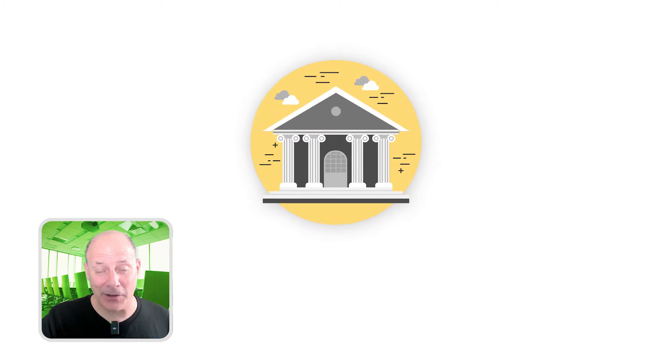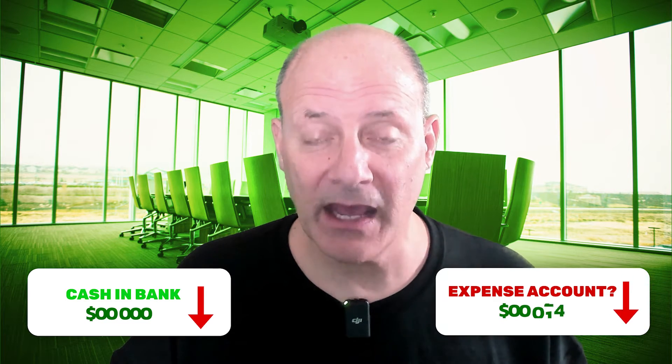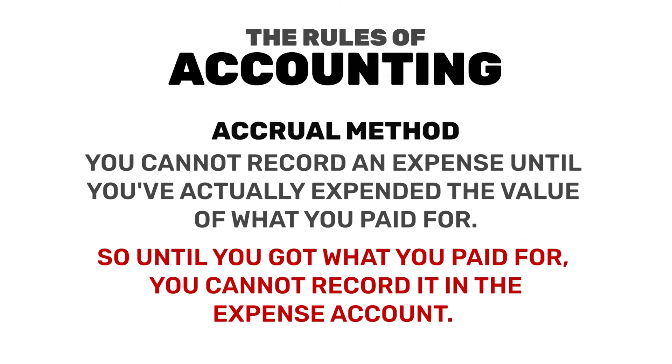We know if we pay from our bank account for the advanced down payment or prepayment, cash and bank will go down. However, what would be the other account that would change in order to keep the trial balance balanced? Should the other account involved in the transaction be the expense that we're paying for? The answer is no. The rules of accounting say that you cannot record an expense until you've actually expended the value of what you paid for. So until you got what you paid for, you cannot record it in the expense account. So what's the other account that changes when cash and bank goes down? The answer is accounts payable.